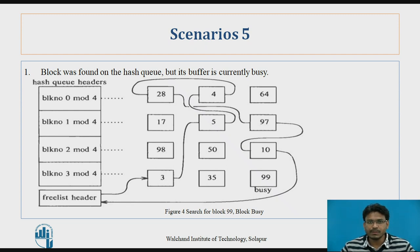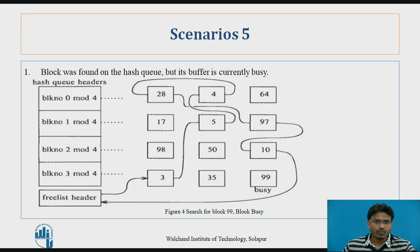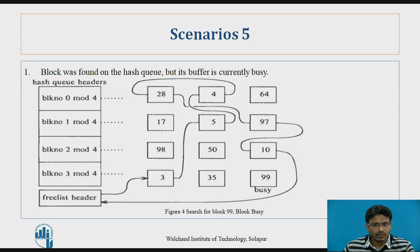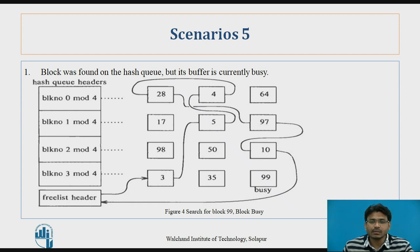We mark that block as busy. Looking at the diagram, we are searching for block 99. To search for it we execute the hashing function: 99 mod 4 gives 3 as the remainder. We search in bucket 3 and find 3, then 35, and then 99 — we found block 99, but it is already marked as busy. Busy means that particular block is currently available on the hash queue but has already been assigned to some other process.